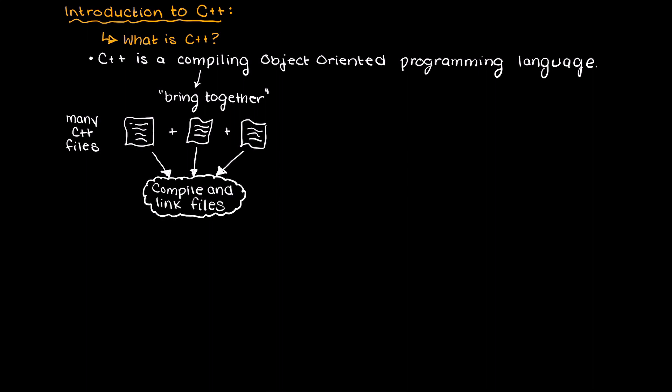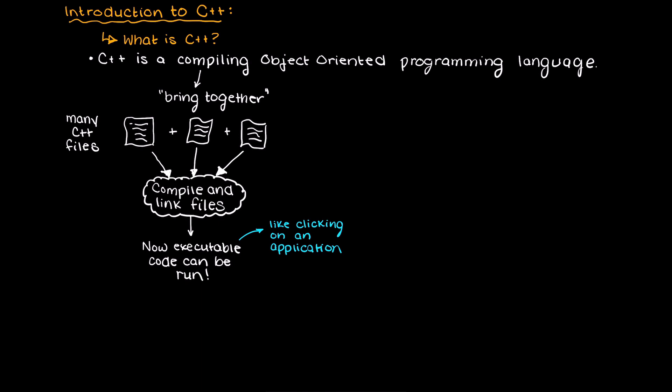The process will go something like this: we will have a bunch of files with C++ code inside them. Then we will compile or collect our relevant files in a process called compiling or compilation. Then the files need to be connected in some manner, and this is called linking. Through linking, our files become executable, meaning they can now be run by the user — for example, by clicking a button or an application.